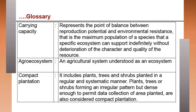Carrying capacity represents the point of balance between reproduction potential and environmental resistance — that is, the maximum population of a species that a specific ecosystem can support indefinitely without deterioration of the character and quality of the resource. This is essentially the bearing capacity: how long and how well an ecosystem can bear its inhabitants without destroying its own system.